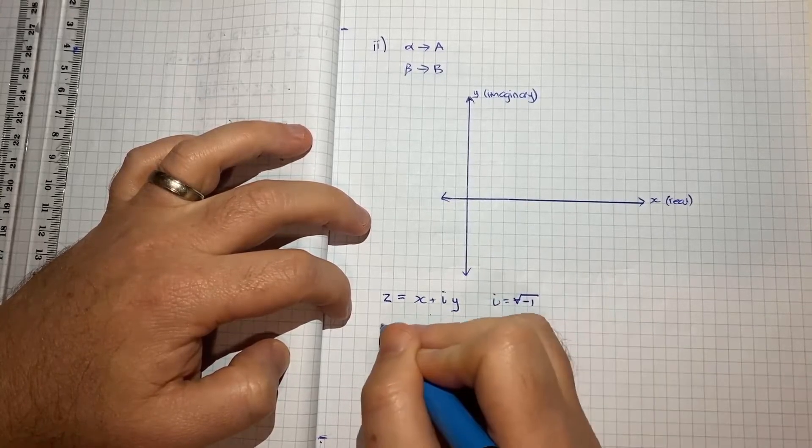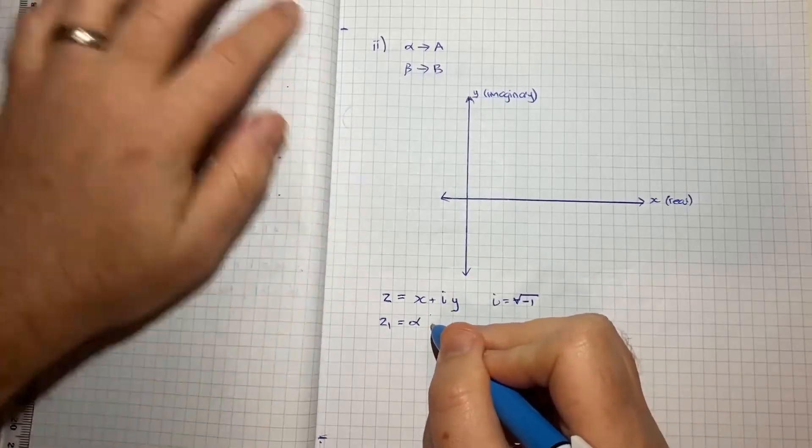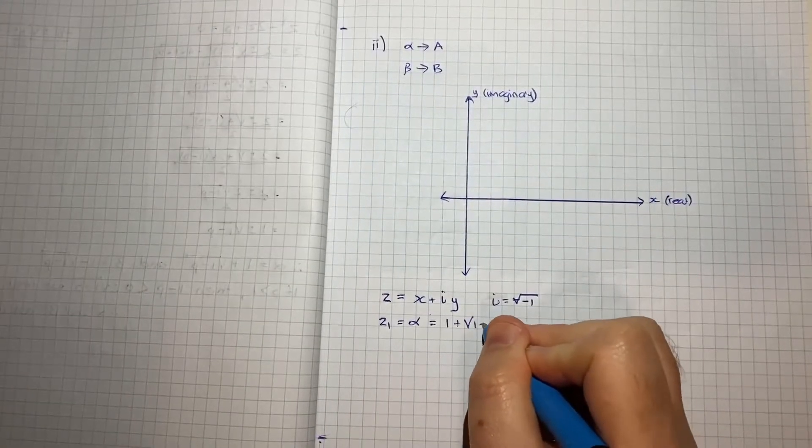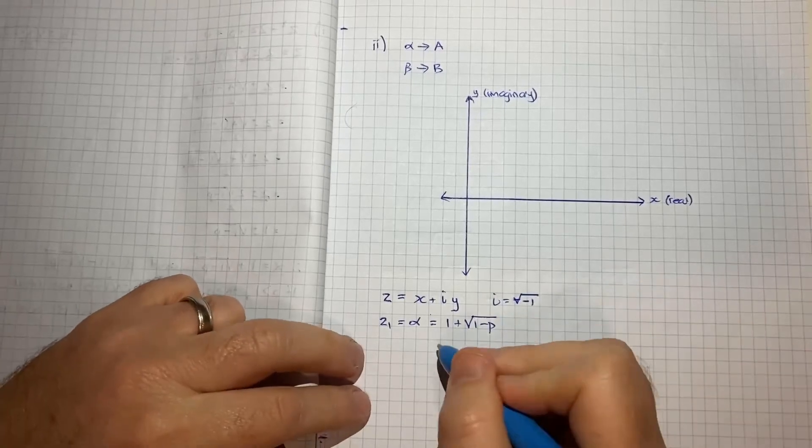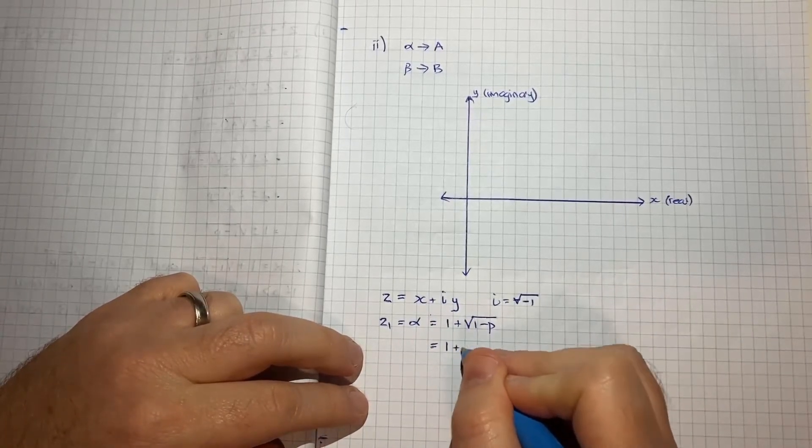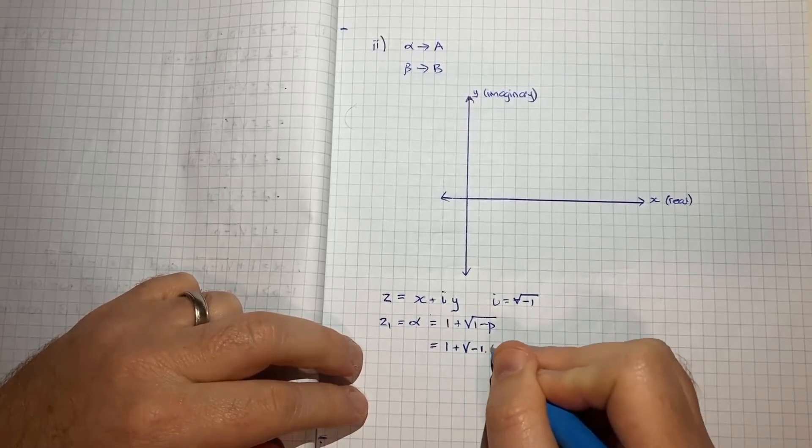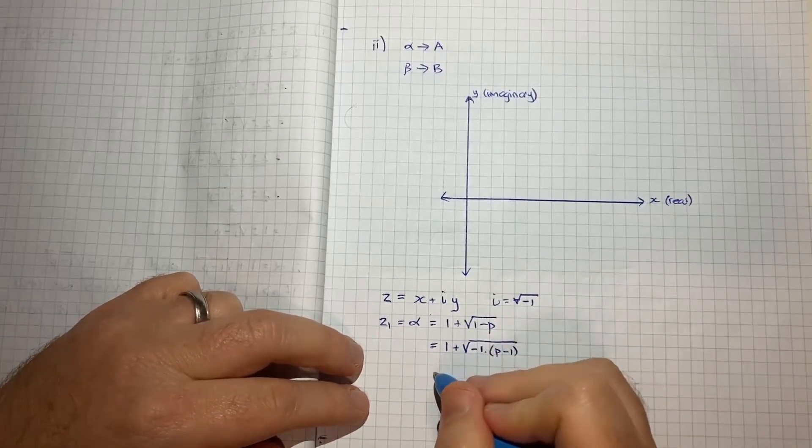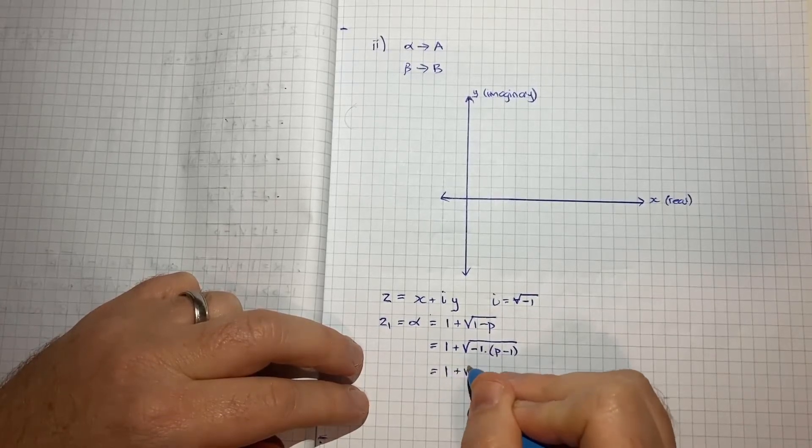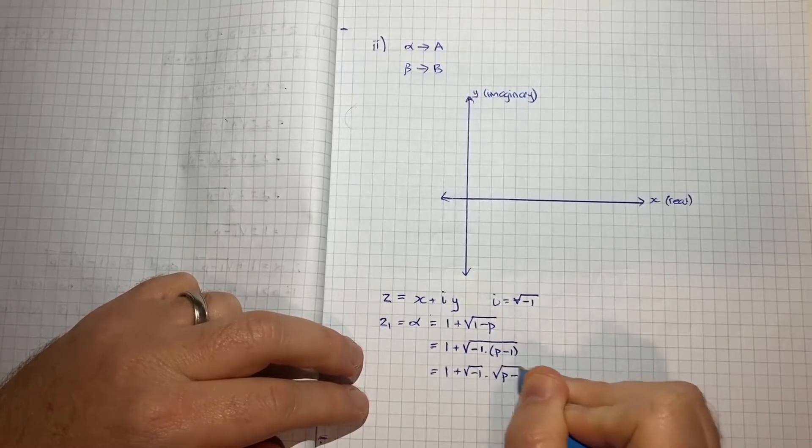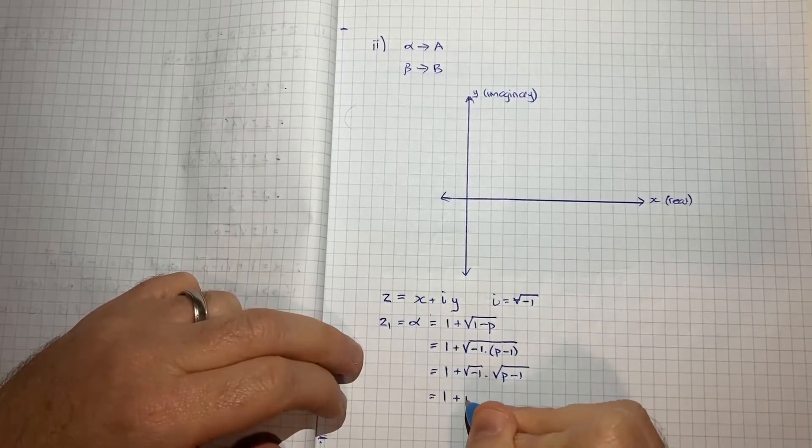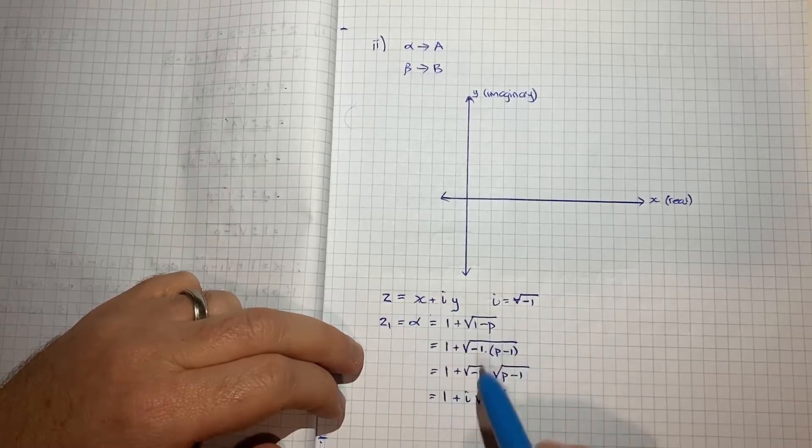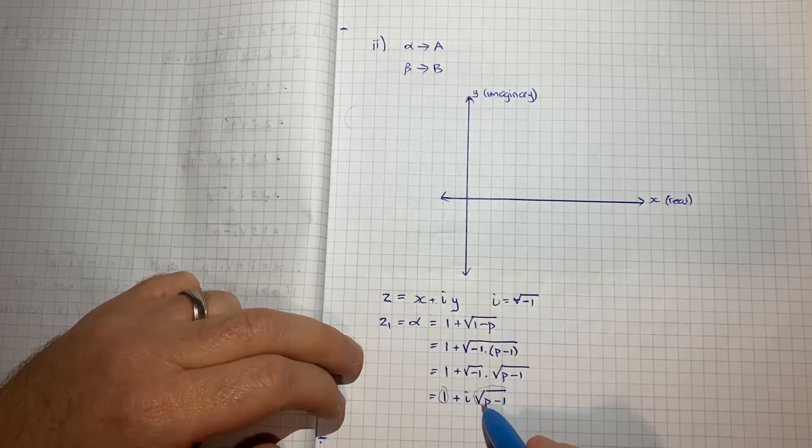So if I say here, I'll call it Z1 is equal to alpha and that's equal to, so for alpha we've had 1 plus the square root of 1 minus P, which I'll rewrite to get it in this format, 1 plus the square root of negative 1 times P minus 1. So all I've done there is just reverse the sign and brought out the negative 1 because that lets me then write it as 1 plus the square root of negative 1 times the square root of P minus 1, which equals 1 plus I root P minus 1. And we see we've now got it in this format, X plus IY, in this case X will be 1, and Y will be the square root of P minus 1.